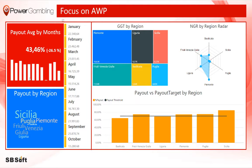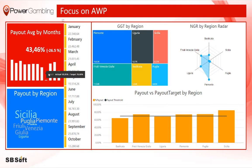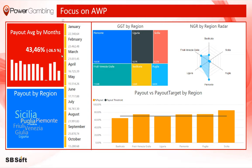In the focus on AWP, the KPI on the left helps you to monitor the payout average by month. The KPI compares the actual payout percentage with the payout threshold — in our case, 70%. Between brackets, it is specified the gap with the target value. Red, yellow, or green color helps you to understand if you are applying the correct payout percentage or not.